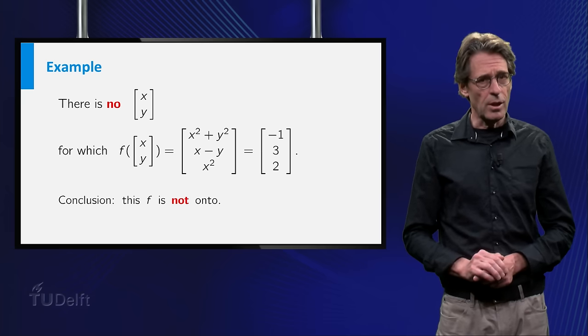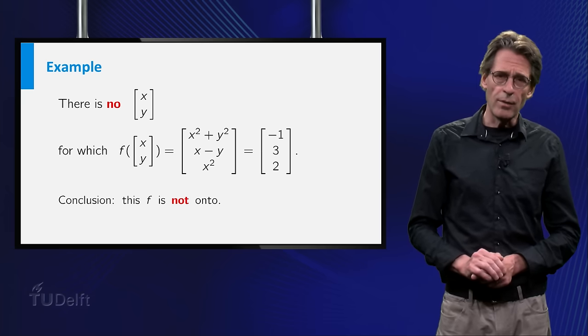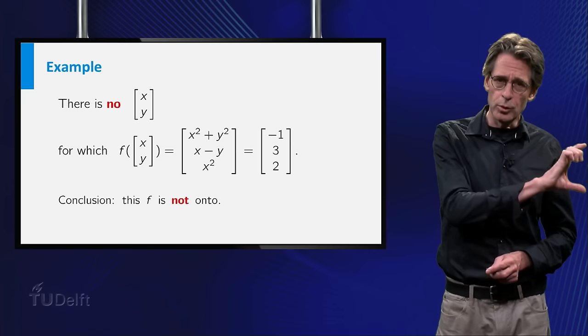The vector function f in the last example is not onto, because there is no solution to f of xy equals minus 1, 3, 2.